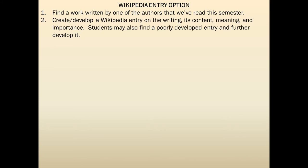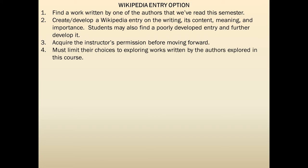The first option is a Wikipedia entry. For this, students would find a written work by one of the authors that we've read this semester and create or develop a Wikipedia entry on the writing, its content, meaning, and importance. Students may also find a poorly developed entry and further develop it. Students will acquire the instructor's permission before moving forward and must limit their choices to works written by the authors explored in this course. That doesn't mean you can only write about things we've read in this course, but only things written by authors whom we've read.